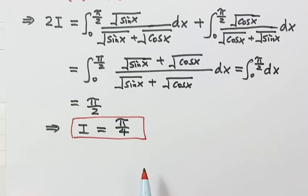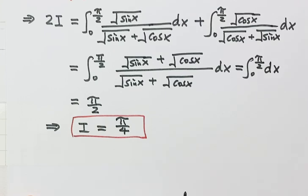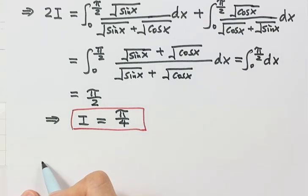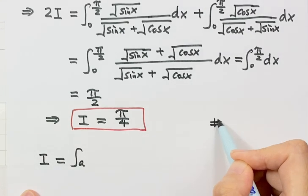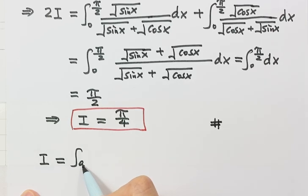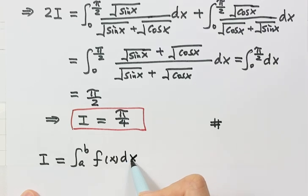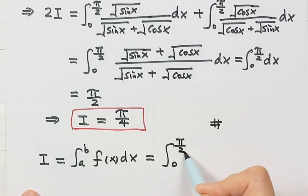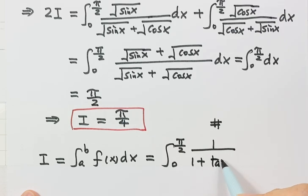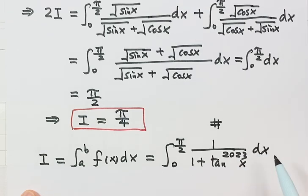Now let's do the second question using the same King Property approach. We set i equal to the integral from zero to π/2 of 1/(1 + tan^2023(x)) dx. We label this as Result 1.